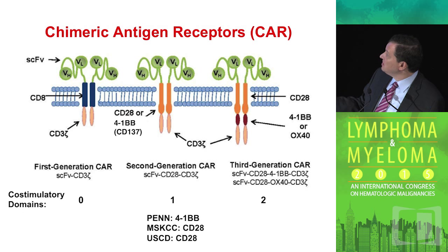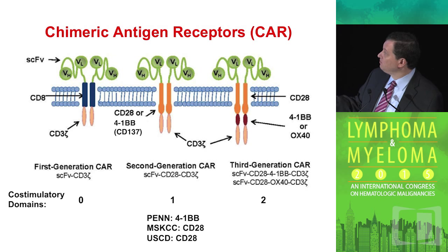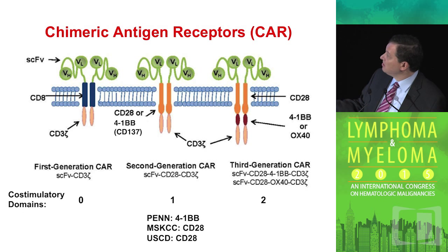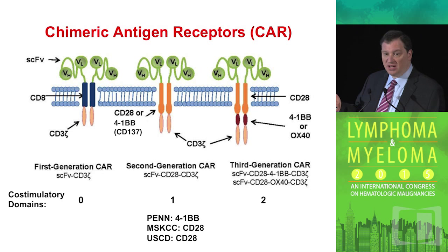The CD3 Zeta protein helps activate the downstream signaling. This first generation was much less complicated but also a lot less effective. The cells went in, they attacked their antigens, but they didn't have any ability to sustain themselves or actually kill off their antigens. The number of co-stimulatory domains in this molecule was zero.